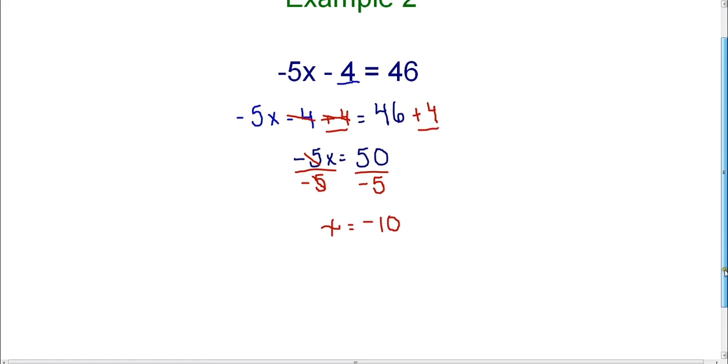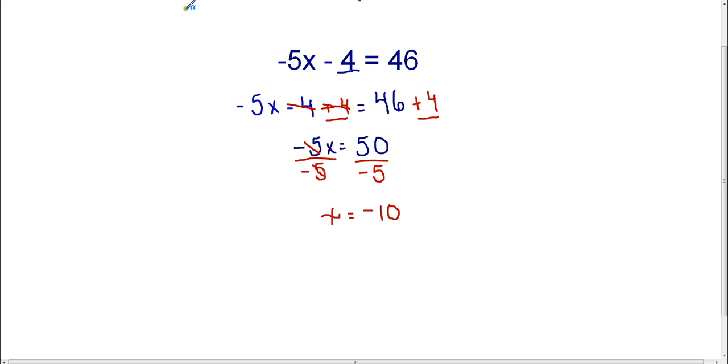Now there's always a way to check and the way that you want to check your answer is to go ahead and substitute your answer for x into the original equation. So if you have negative 5x minus 4 equals 46, the only number that should work for x is negative 10. It's the only number that we should be able to substitute in order for this to work out correctly.